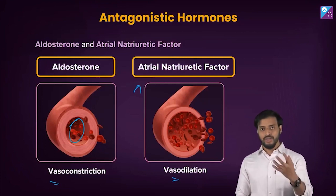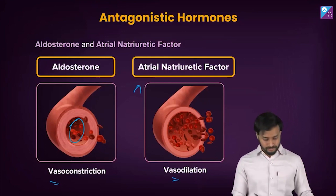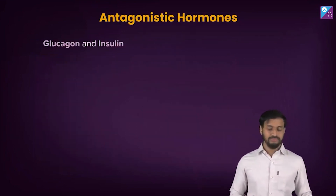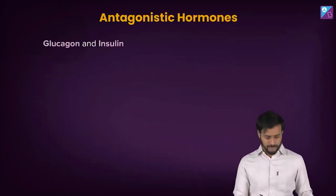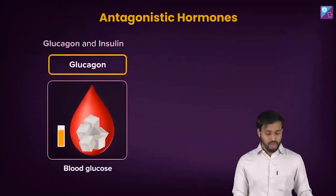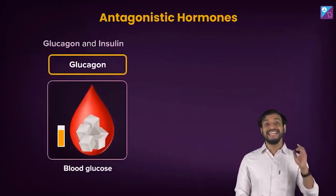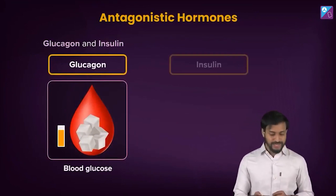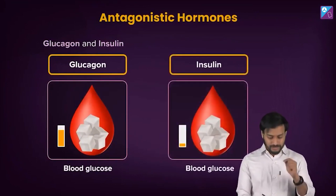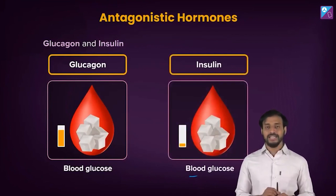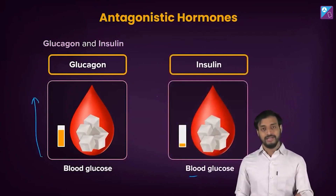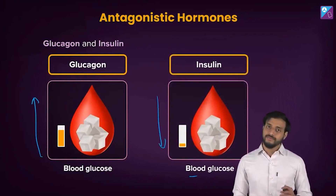Next, a very common example: glucagon and insulin. Glucagon helps in increasing blood glucose, whereas insulin helps in decreasing blood glucose. Glucagon will increase and insulin will decrease — correct.